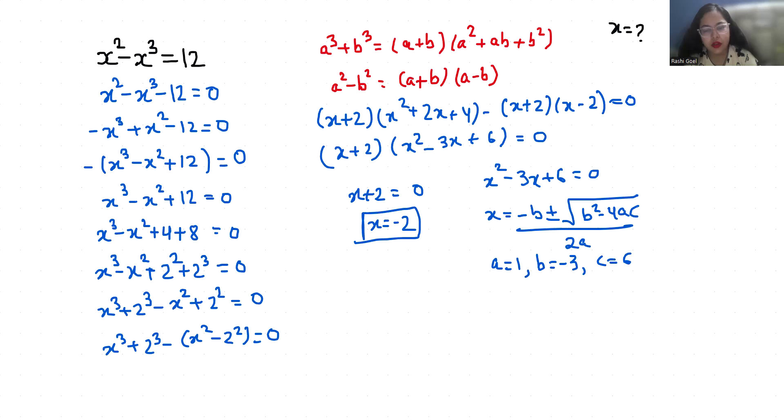So x is equals to minus minus 3 plus minus under root minus 3 square minus 4 times 1 times 6 by 2 times 1. So 3 plus minus under root 9 minus 4 times 6 is 24 by 2.